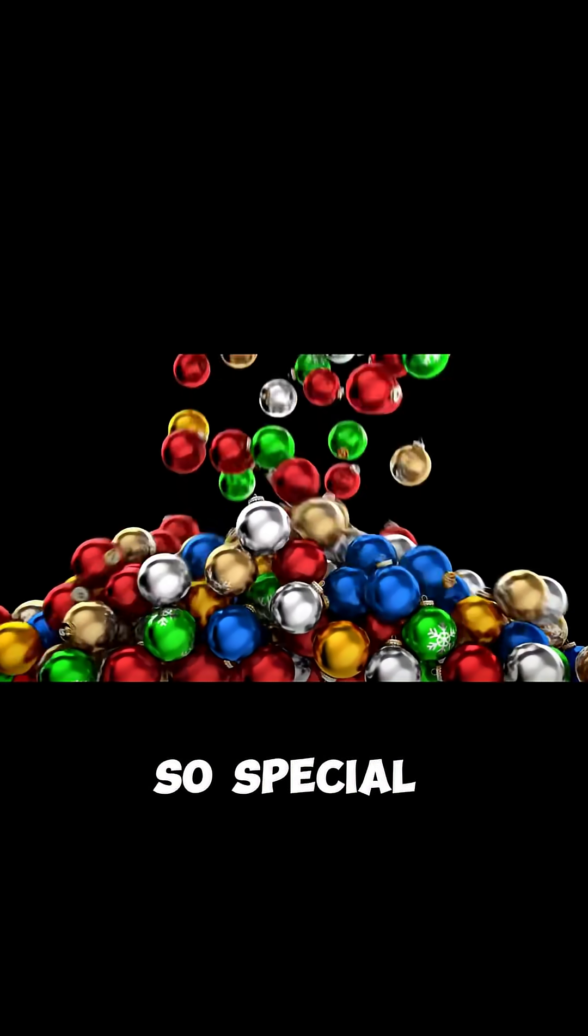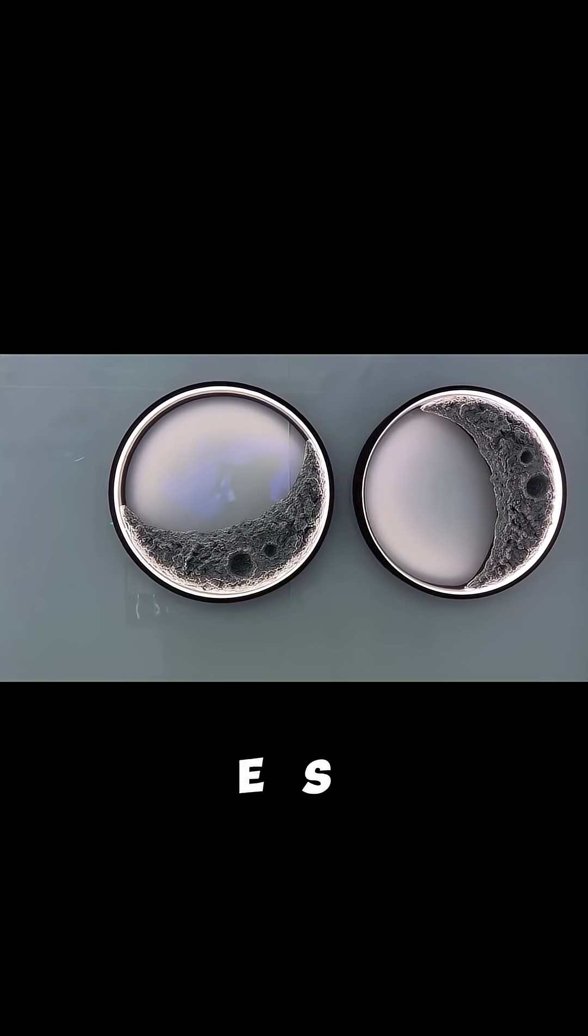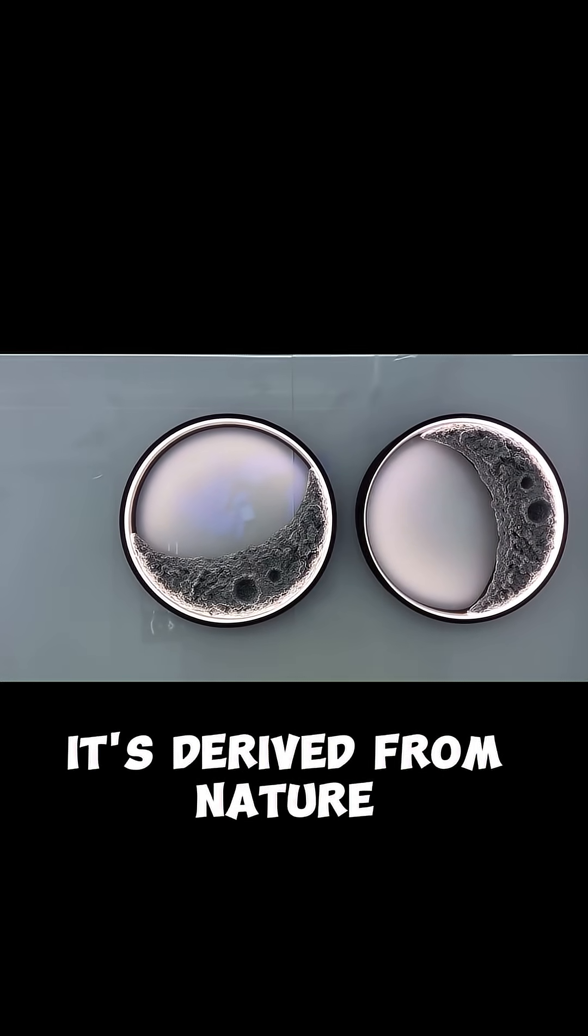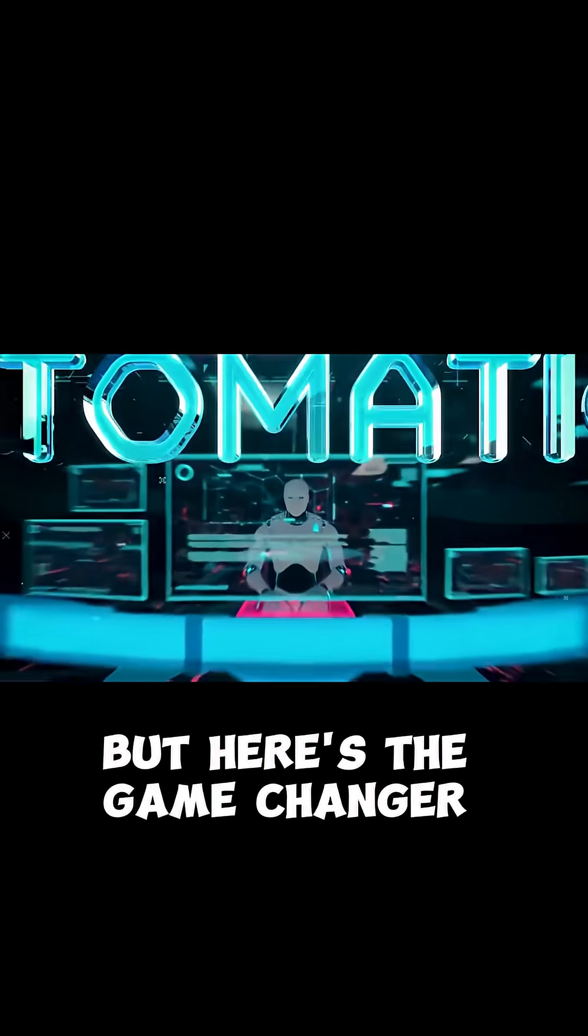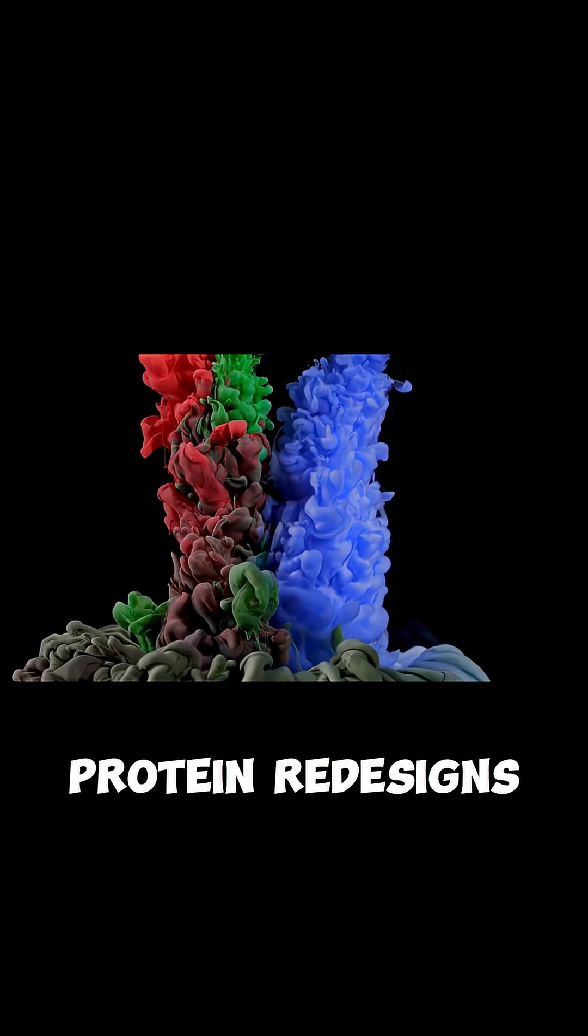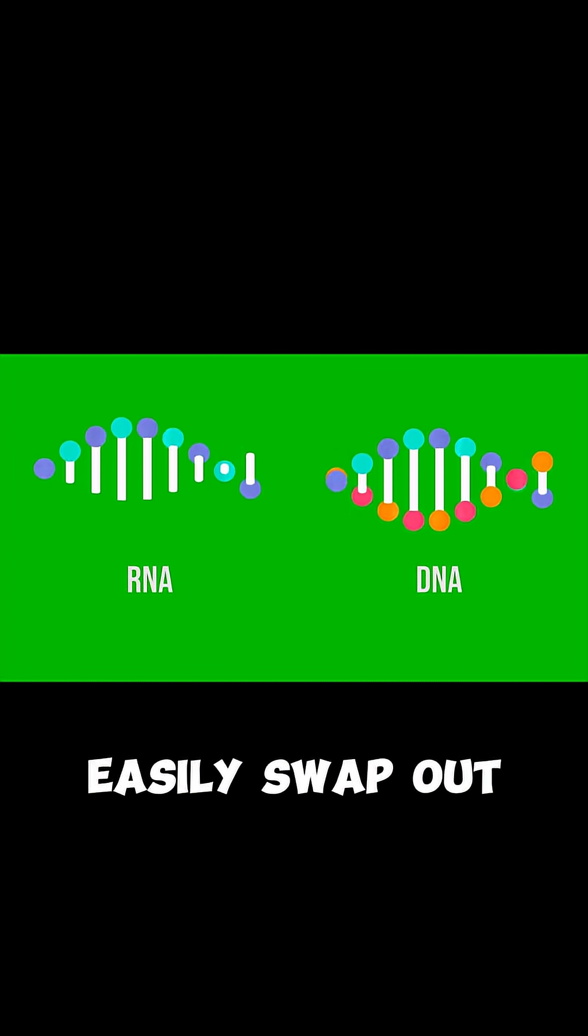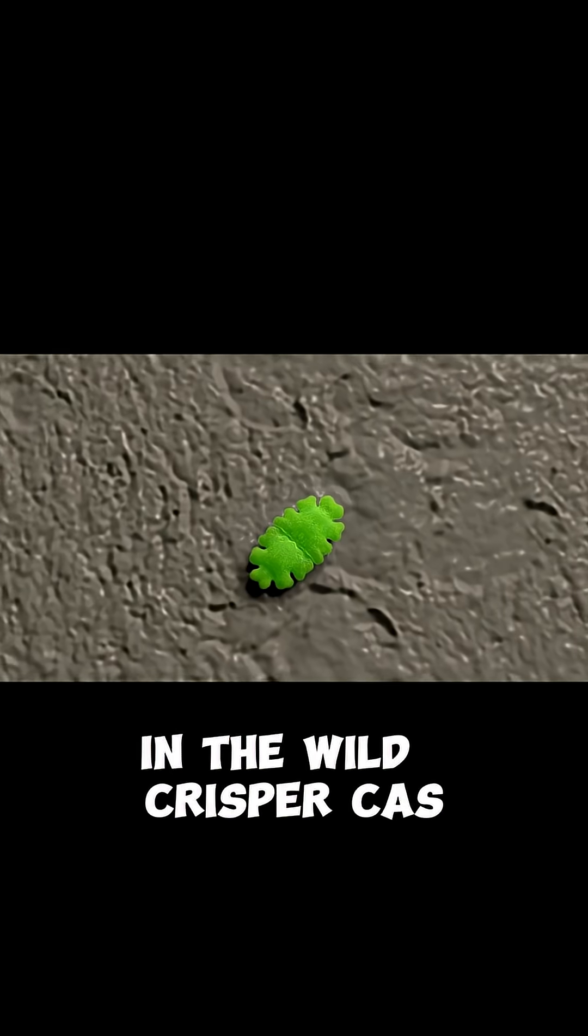What makes CRISPR so special? Like zinc fingers and TALEs, it's derived from nature. But here's the game changer: while the others bind to DNA through complex protein redesigns for each new target, CRISPR uses a simple RNA guide that you can easily swap out to hit different sites. In the wild, CRISPR-Cas helps bacteria fight off viruses or phages.